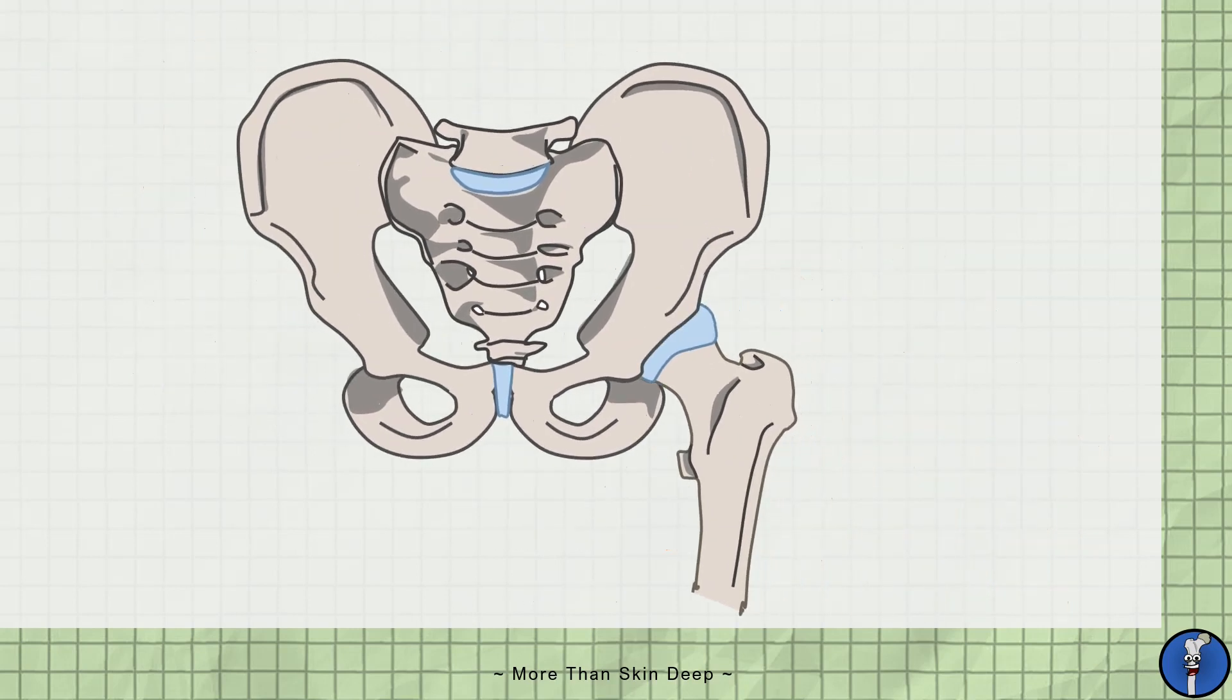There are four key ligaments holding the head of the femur into the hip joint. The first is posterior to the joint and goes from the ischium to the greater trochanter, thus it is known as the ischiofemoral ligament.